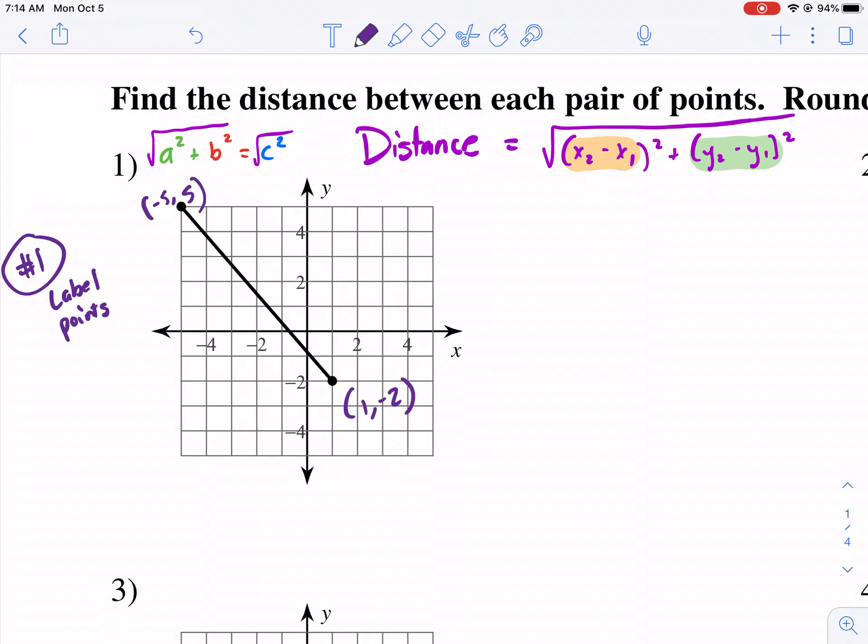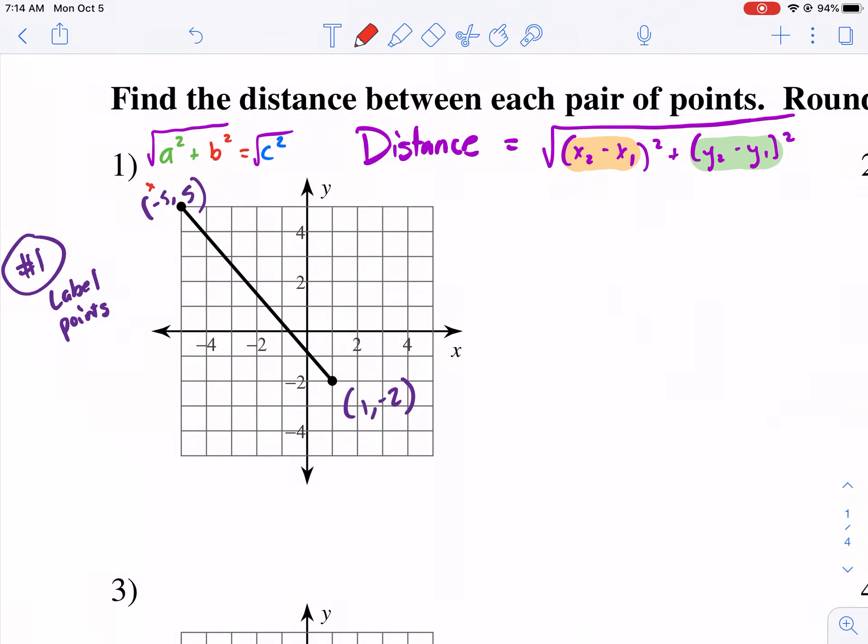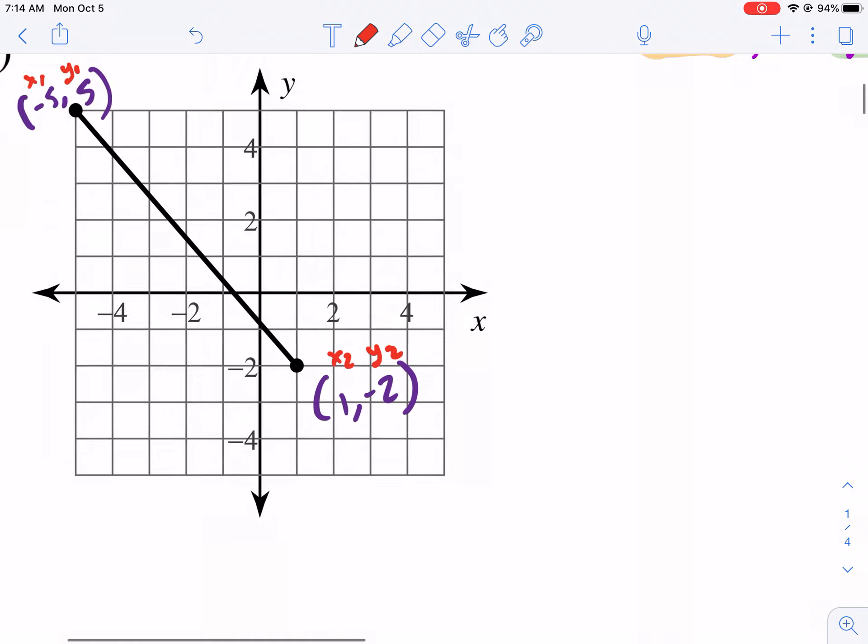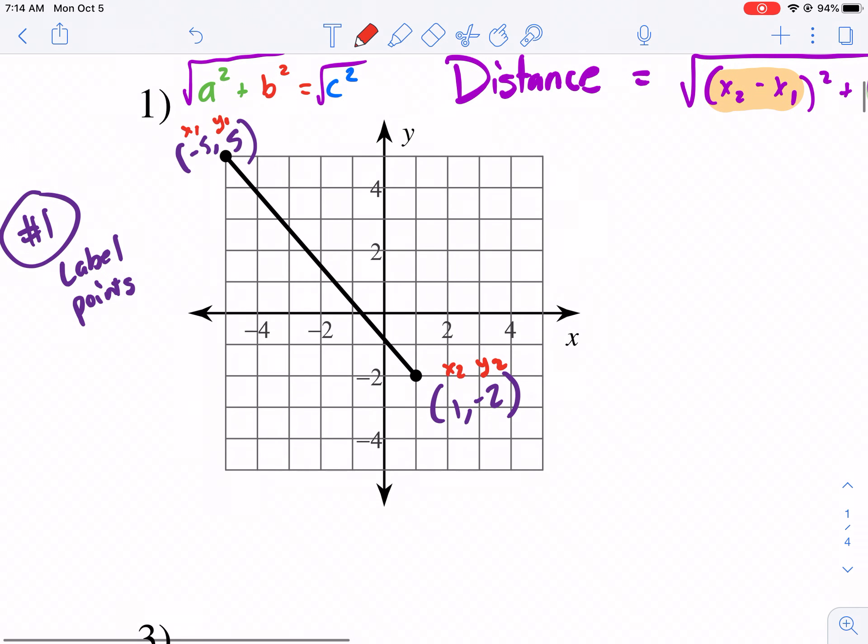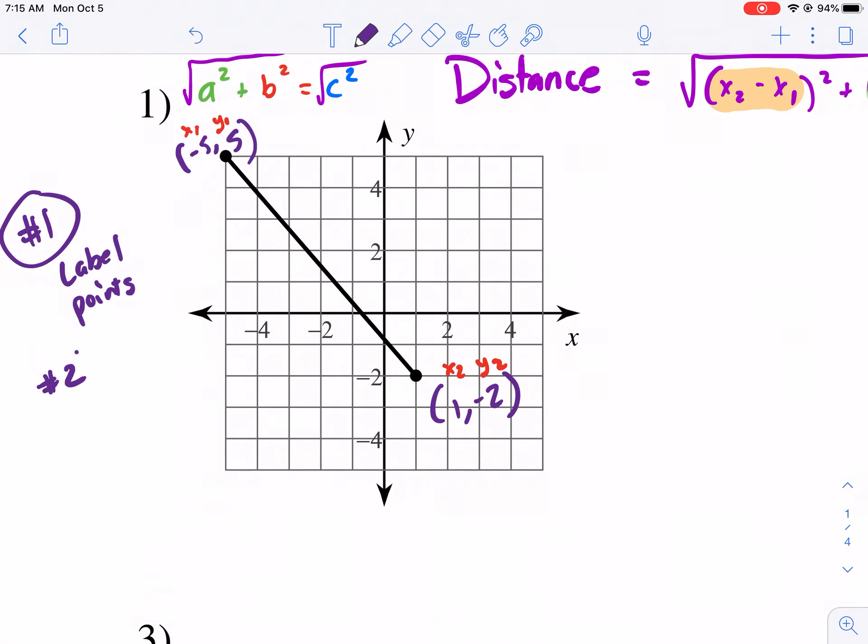So now that we have these points labeled, that's our first step. So number one, we want to label the points. So we label the points. This is very similar to the midpoint video. We're going to label x1, y1, x2, y2. And this is what I mean, it doesn't really matter which one you call x1 and y1, or x2, y2. Just matters that you're consistent and keep the x's, add the ones together and the twos together. So number one, we're going to label the points. Number two, you're going to plug into the formula.